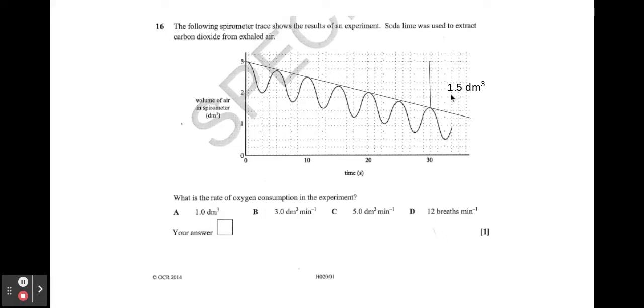I've got 1.5 decimeter cubed, my change in y. I've got 30 seconds here which is my change in x or 0.5 minutes, and that gives me 3 decimeter cubed per minute.